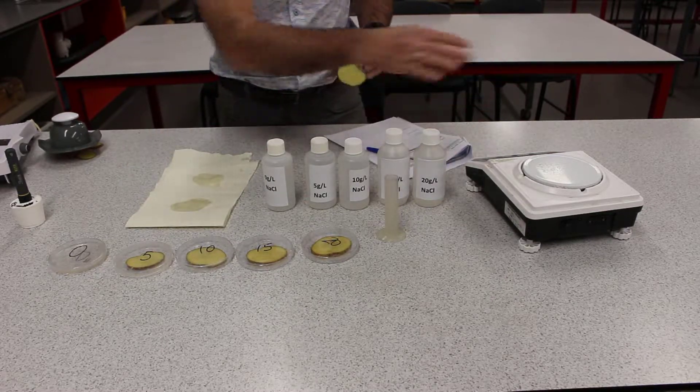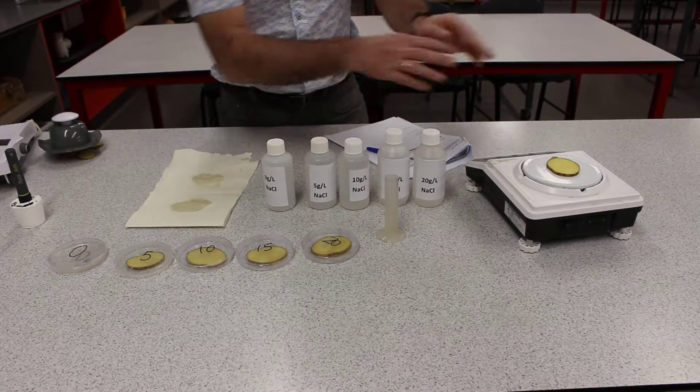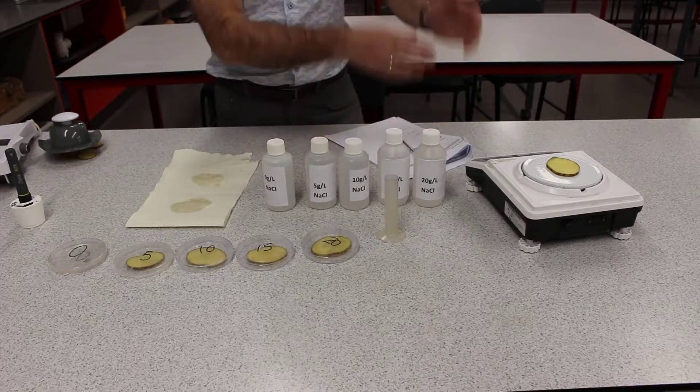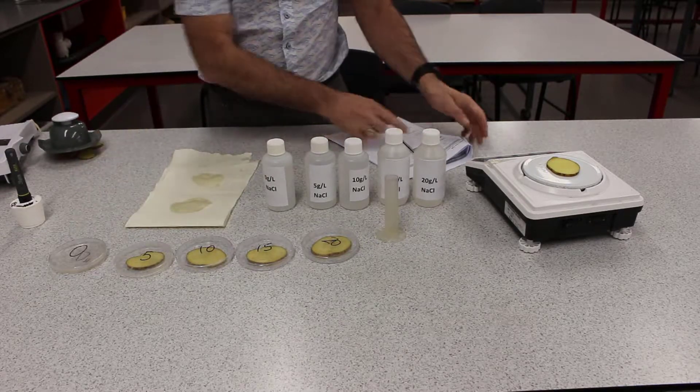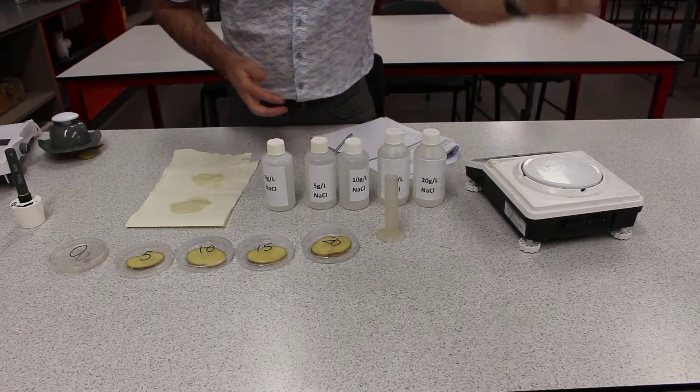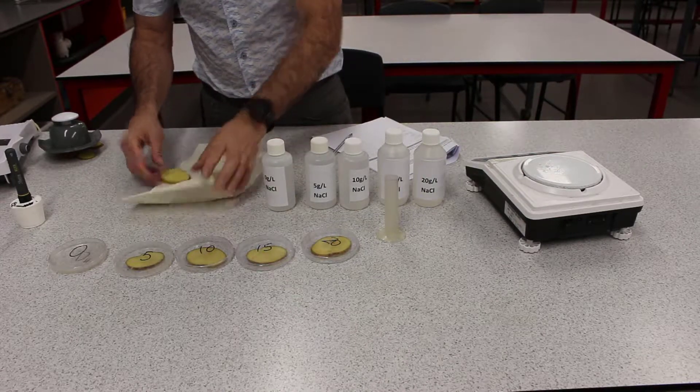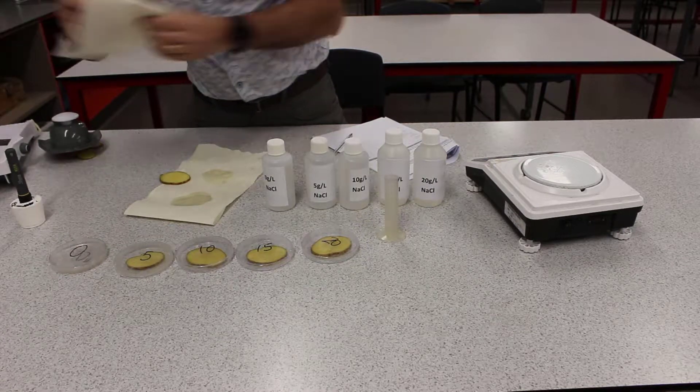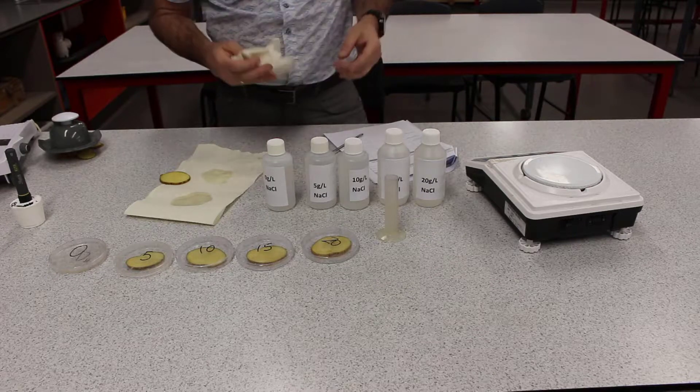Again, make sure your scales are zero. Put the potato on there, write down your final mass. So that was for zero grams per litre. So we make sure we put in the zero grams per litre column. We can then discard that. Just dry your scales because there might be a little bit of extra water on there and all of that might actually affect our results.